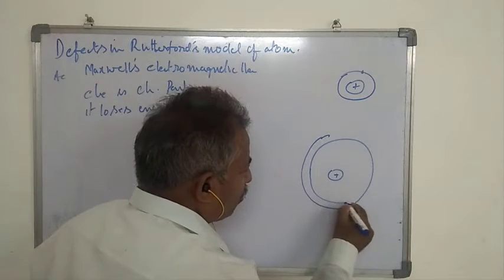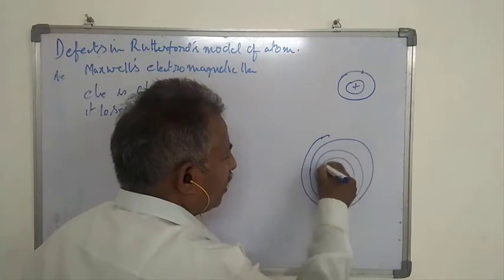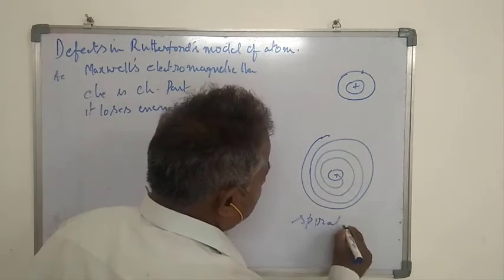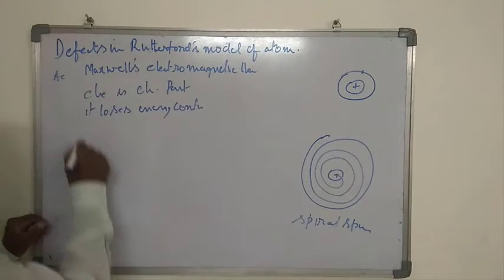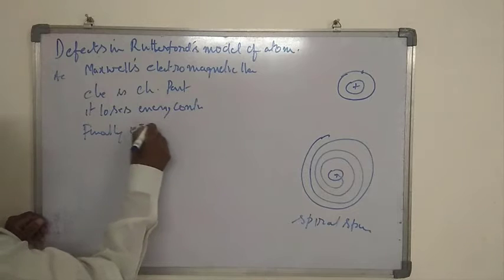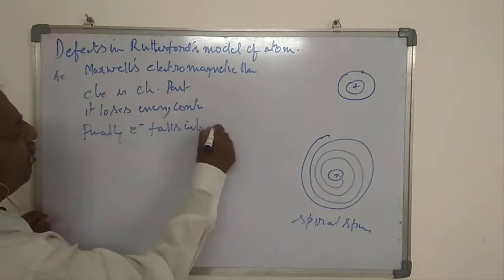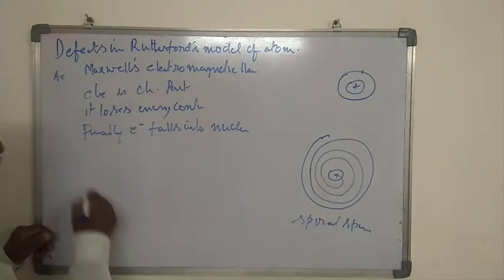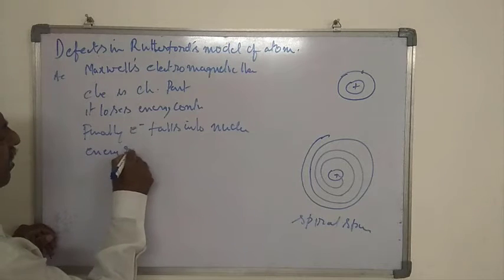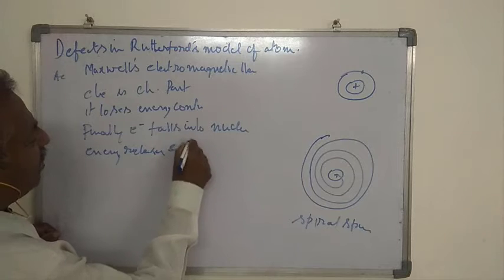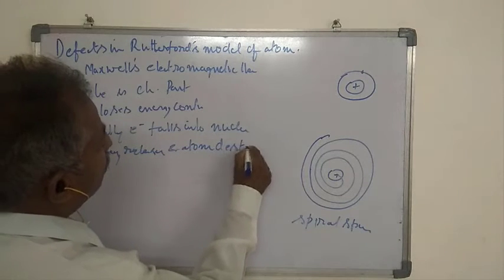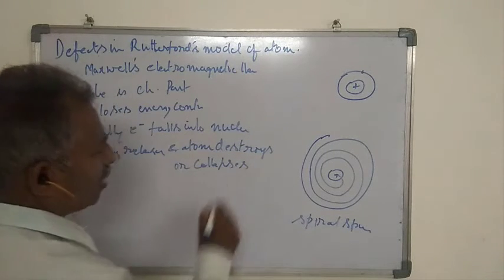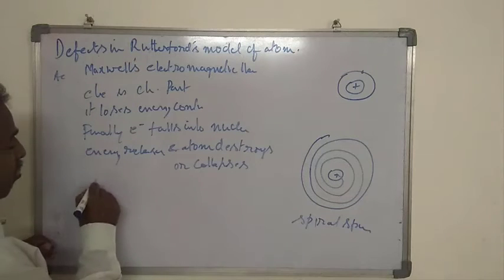Therefore, it comes closer to the nucleus, revolves like a spiral spring, and finally falls into the nucleus. If positive charge and negative charge come close to each other, energy releases and the atom destroys — atom collapses. But this is not happening.